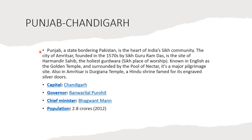The next one is Punjab and the capital is Chandigarh. Punjab, a state bordering Pakistan, is the heart of India's Sikh community. The city of Amritsar, founded in the 1570s by Sikh Guru Ram Das, is the site of Harmandir Sahib, the holiest Gurdwara and Sikh place of worship. Known in English as the Golden Temple and surrounded by the Pool of Nectar, it is a major pilgrimage site. Also in Amritsar is the Durgiana Temple, a Hindu shrine famed for its engraved silver doors. The capital is Chandigarh, Governor is Banwarilal Purohit, Chief Minister Bhagwant Mann, and the population is 2.8 crores in 2012.